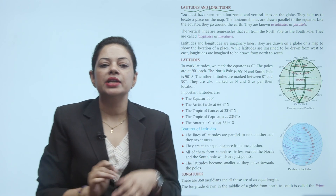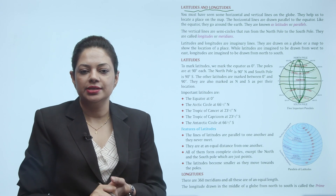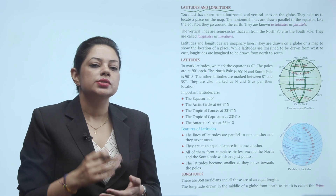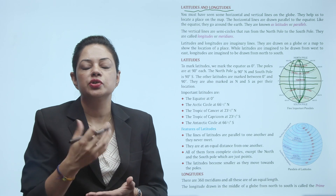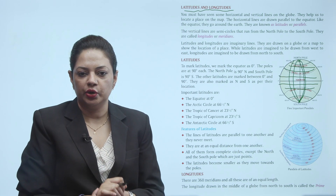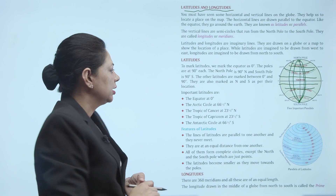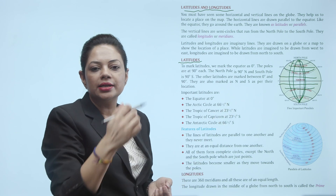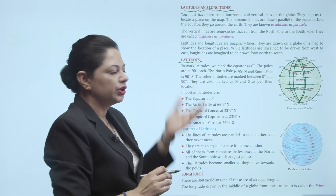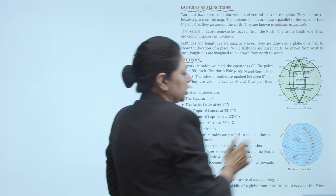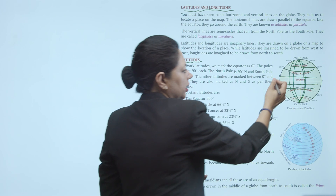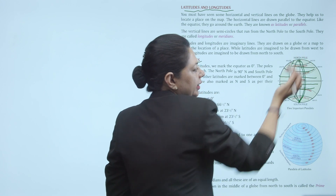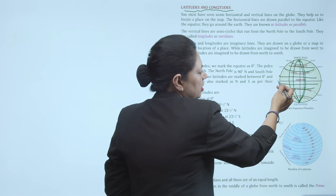Yeh sirf imaginary lines hain — yeh asliyat mein nahi hoti hain. Yeh sirf hum kisi bhi place ki location mein help ke liye draw kar rakhi hain. Latitudes ko mark kaise karte hain — equator par 0 degree liya; north ki taraf jaate hain toh 1, 2, 3... up to 90 degree north, aur south ki taraf jaate hain 0, 1, 2, 3... up to 90 degree south.